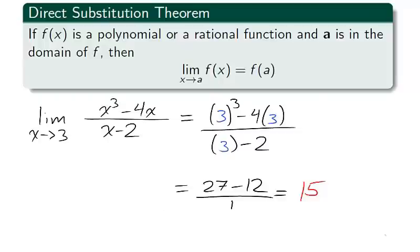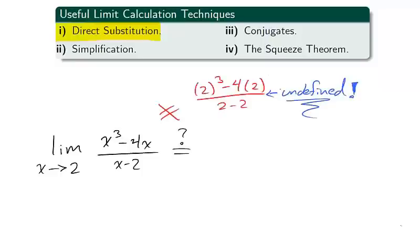But what if we were to look for the limit as x approaches 2? This is where simplification comes into play. We cannot calculate this limit using the direct substitution theorem, as the function is undefined at x equals 2. So how can we calculate this limit?